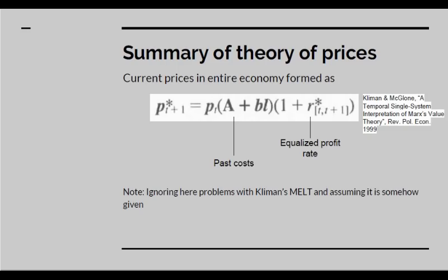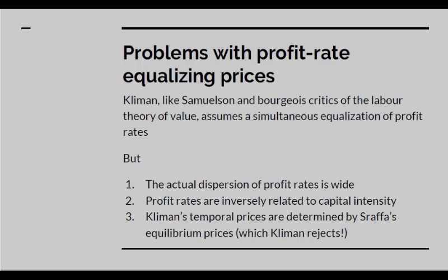Now let's look at his theory of prices. Basically, he says that the current prices in the economy are set by past costs in money terms multiplied by an equalised profit rate. We again ignore problems with Kliman's MELT. But there are general problems with any theory — like Kliman's, Samuelson's, or other bourgeois critics of the labour theory of value — which assume a simultaneous equalisation of the rate of profit.